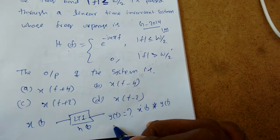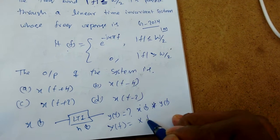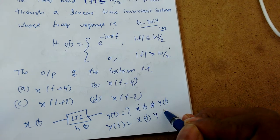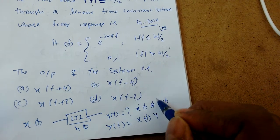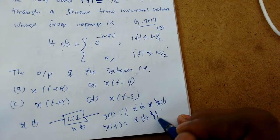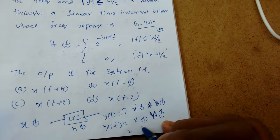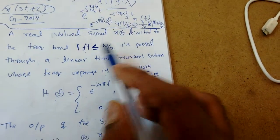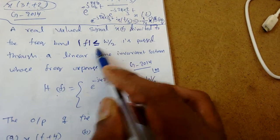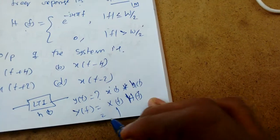If we use the Fourier transform, Y(f) = X(f) · H(f). Now what is X(f)? It is band-limited to −W/2 to W/2.